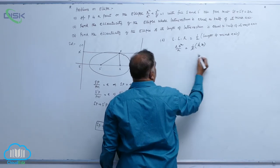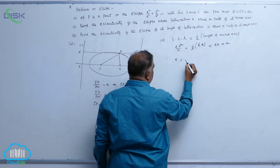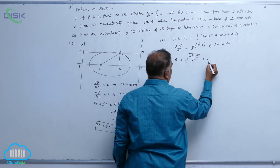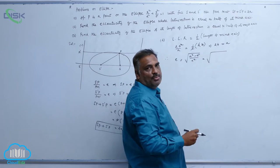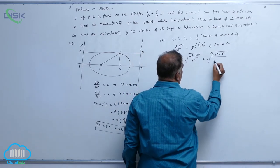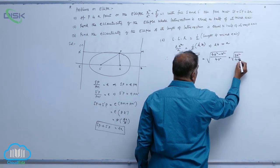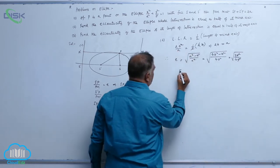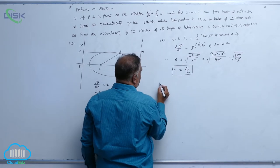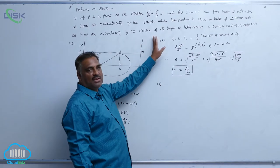Simplifying: two cancels and b cancels, giving 2b equals a. Therefore e² equals (a² minus b²) divided by a². Substituting a equals 2b: e² equals (4b² minus b²) divided by 4b², which is 3b²/4b² = 3/4. So e equals √3/2.